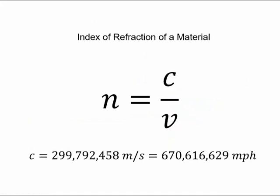The way refraction is dealt with theoretically, and the way we're going to use it in this lab, is through what's called the index of refraction, n. The index of refraction in a material is the ratio of c over v, where c is the speed of light in empty space and v is the speed of light in the material. The speed of light in empty space is about 300 million meters per second, which is about 671 million miles per hour. In most materials light moves more slowly than in empty space, so the index of refraction is greater than one.